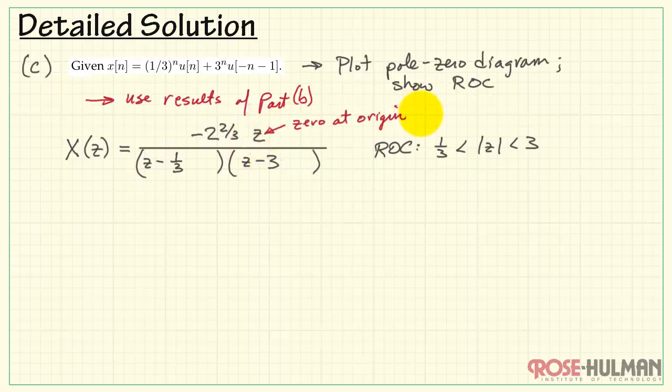Now we can clearly observe that we have a zero at the origin. This gives us a pole at z equals one-third. Because when I insert z equals one-third into that expression, we have one-third minus one-third is zero. Here we have a pole at z equals plus three.